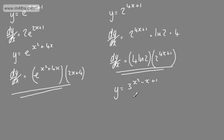We would differentiate the outside function, which gives us 3 to the u times the natural log of 3, and then multiply through by the derivative of u with respect to x. If you wanted a formal chain rule approach, you could take that. I'm just going to do it informally, as I'm assuming you're happy with that.